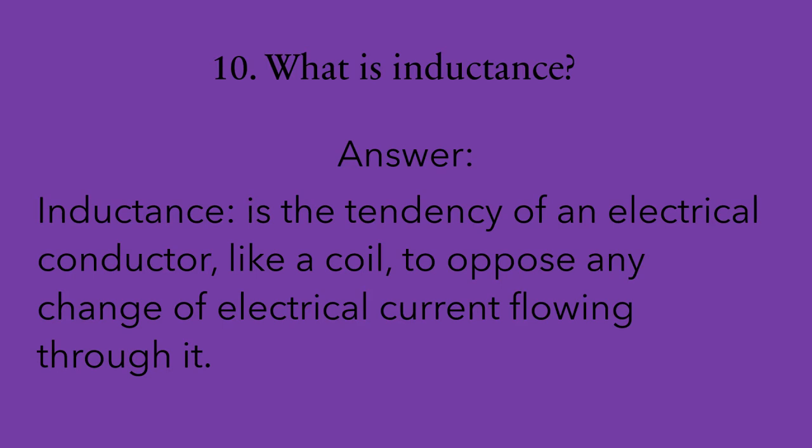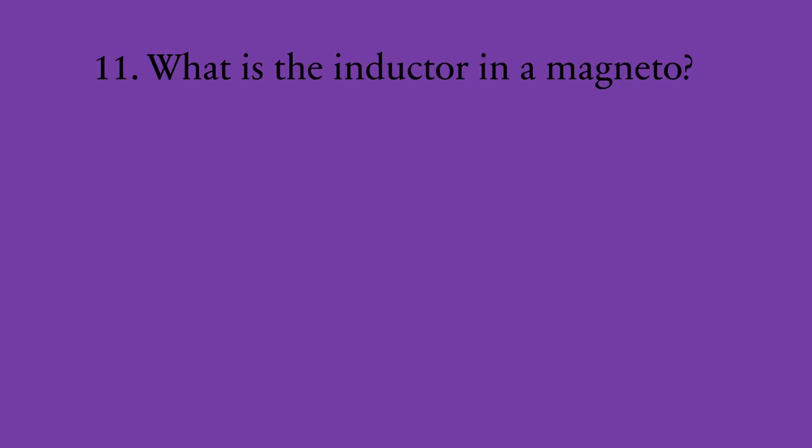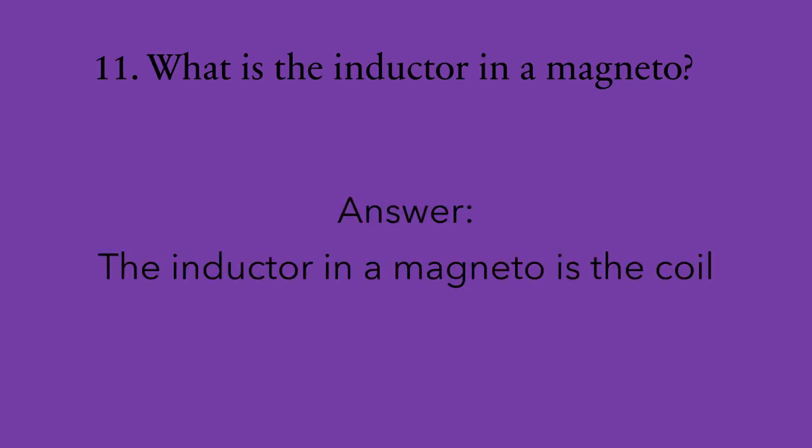Number ten: what is inductance? Inductance is the tendency of an electrical conductor, like a coil, to oppose any change of electrical current flowing through it. According to Lenz's law, when voltage is induced in a coil in an AC circuit, the resulting current produces a magnetic field around that coil. That magnetic field produces its own voltage, or EMF, that will oppose any changes of current flow. Number eleven: what is the inductor in a magneto? The inductor in a magneto, like most circuits, is the coil.